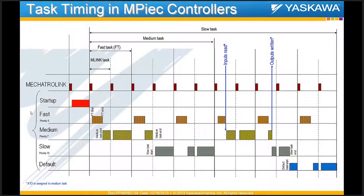The first row being used for task timing is the Mechatrolink and motion engine task update, which has the highest priority. The user cannot do anything to control that — the Mechatrolink and motion engine take up the highest priority.